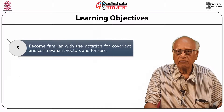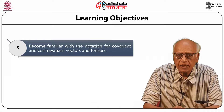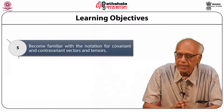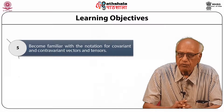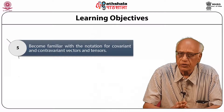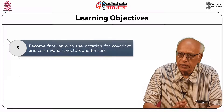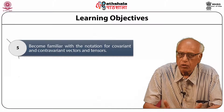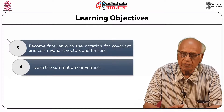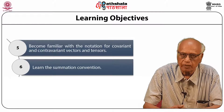We will also become familiar with the notation for covariant and contravariant vectors and tensors. If you have already learnt it, that is very good, but if you haven't, it is absolutely crucial for doing field theory in modern times. You have to learn it thoroughly. We also learn something called the summation convention, which is an extremely useful convention introduced first by Einstein.